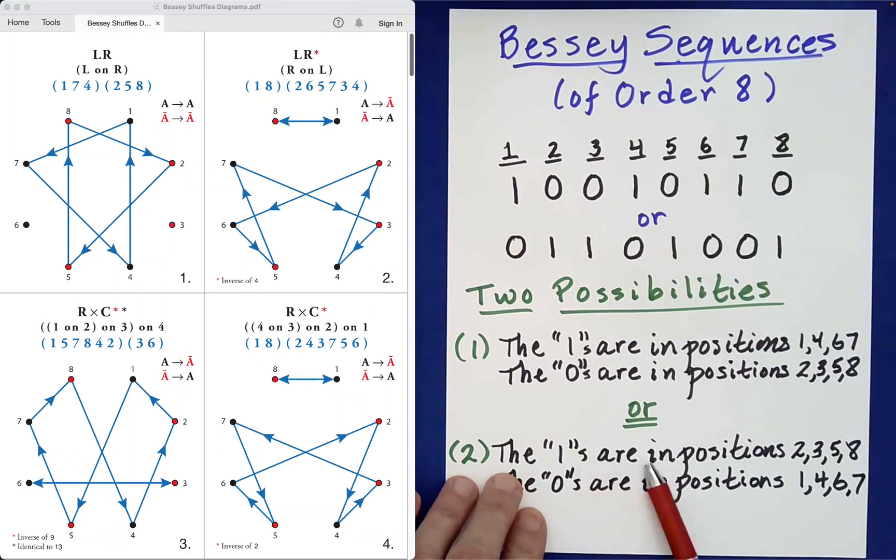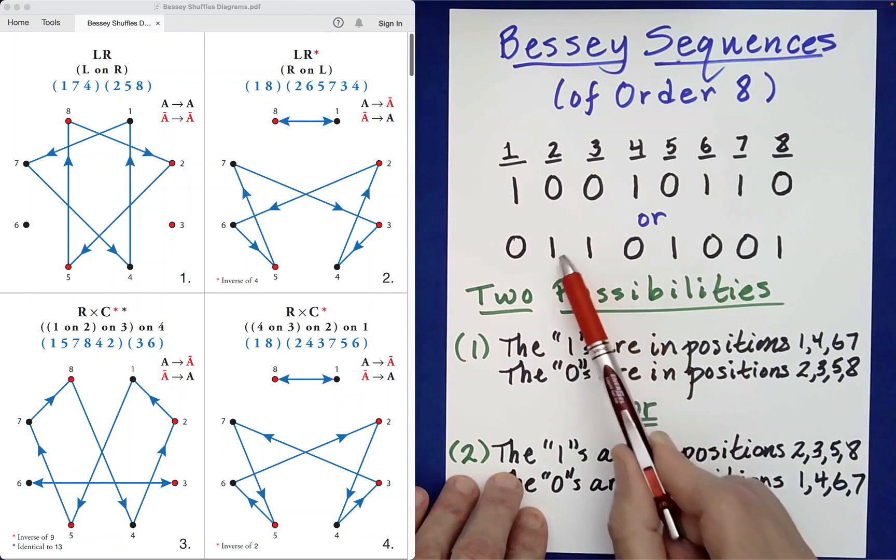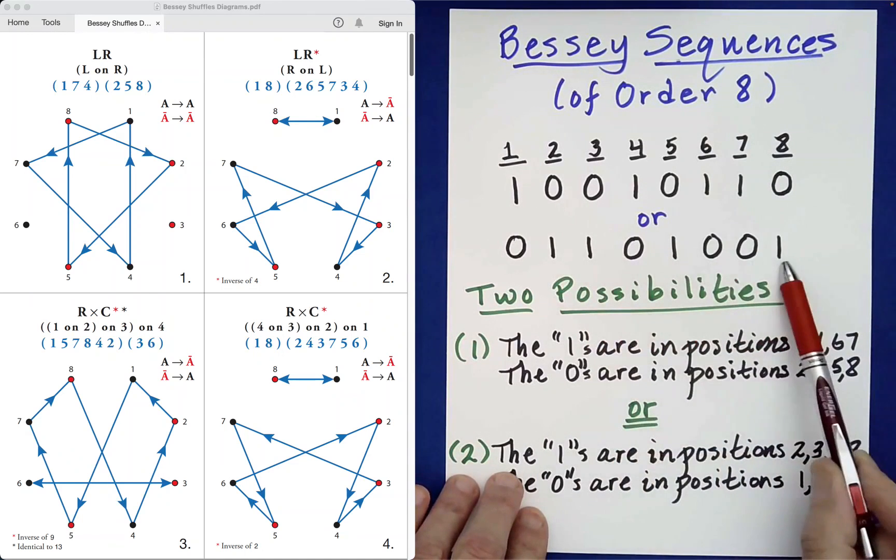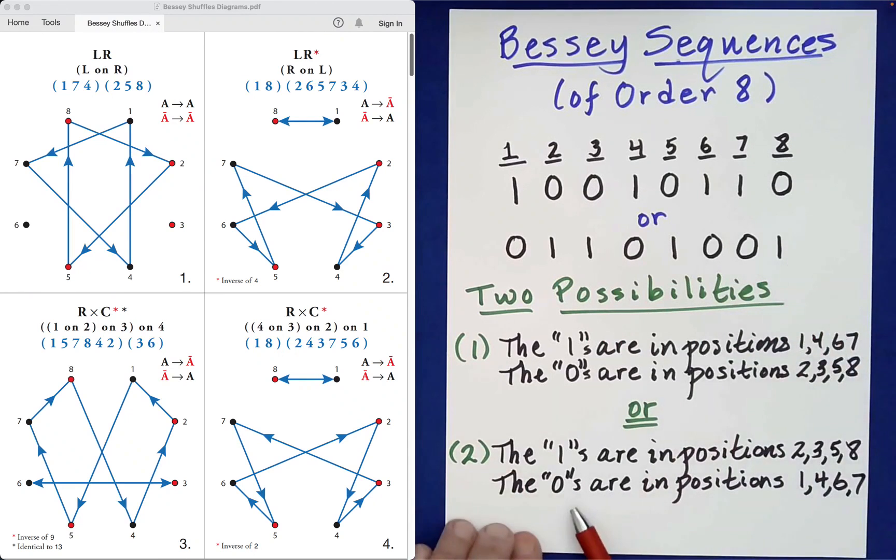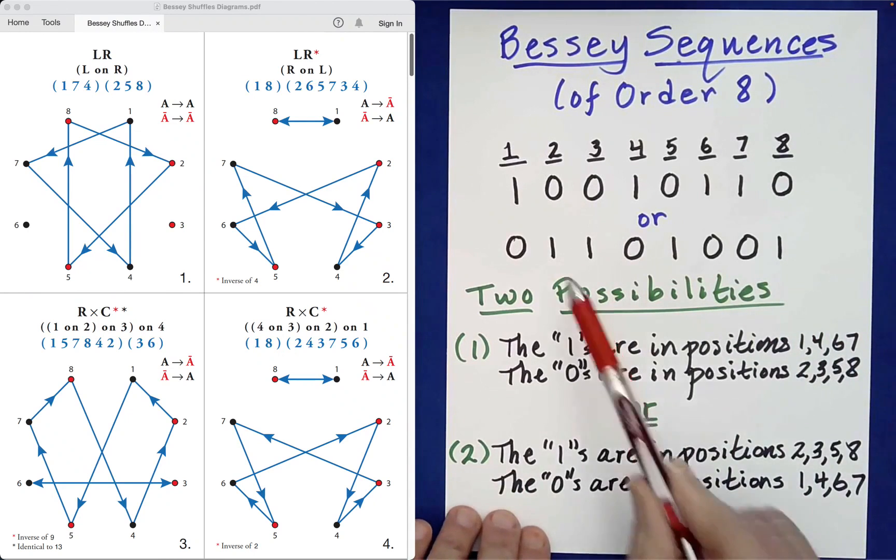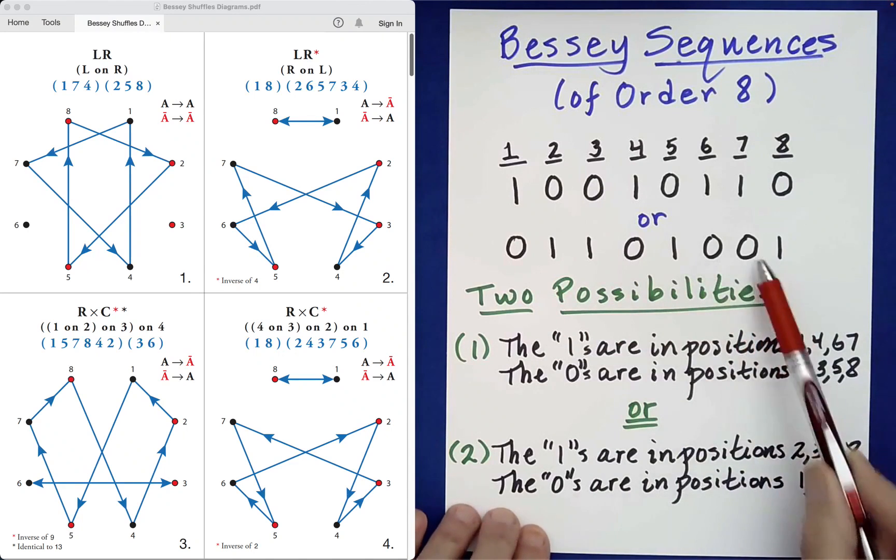The 1's are now in positions 2, 3, 5, 8, and the 0's are in positions 1, 4, 6, 7.